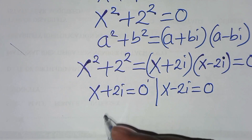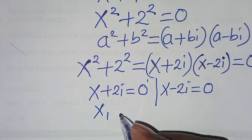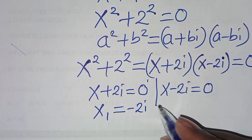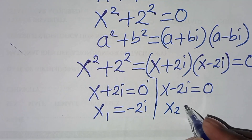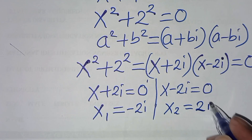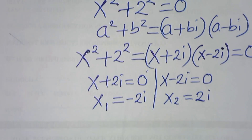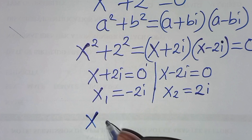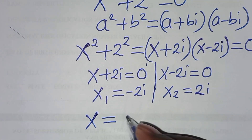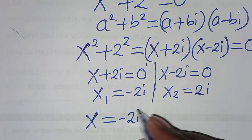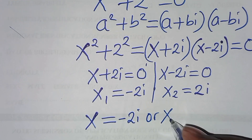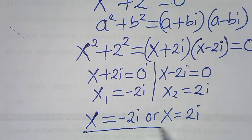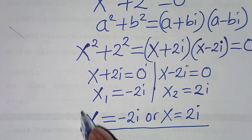Therefore the first value x₁ equals minus 2i and the second value x₂ equals 2i. So x equals minus 2i or x equals 2i — these are the values of x that we have.